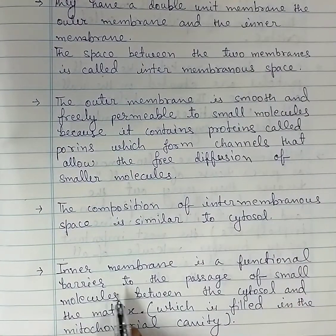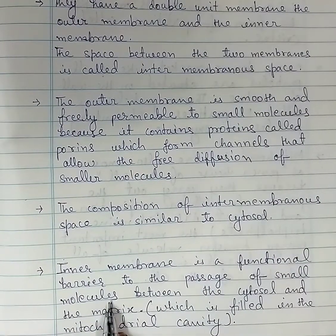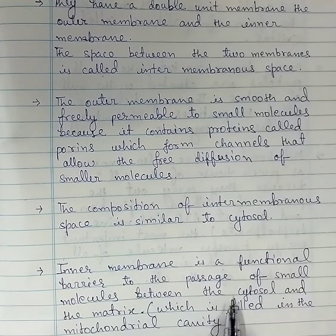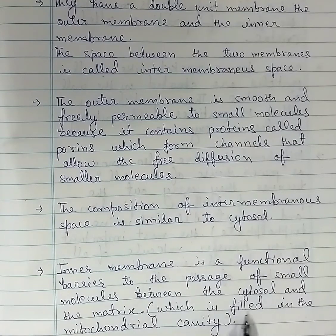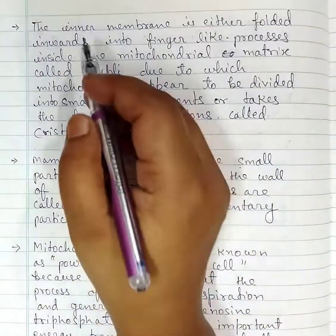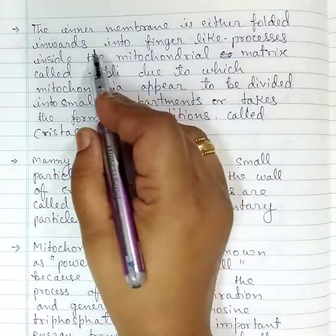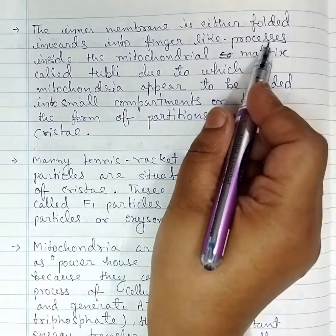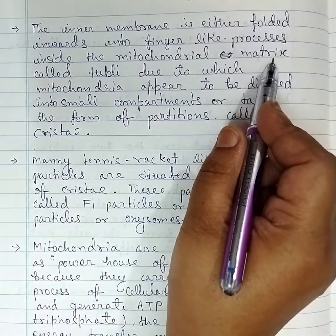The inner membrane is a functional barrier to the passage of small molecules between the cytosol and the matrix, which fills the mitochondrial cavity.